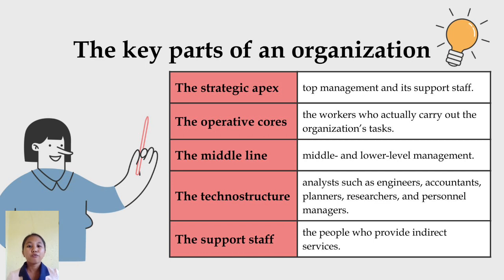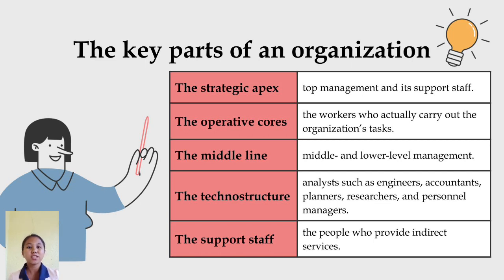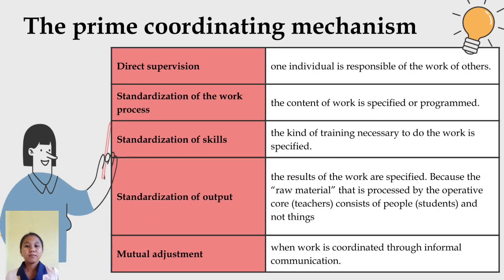The fourth key part is the technostructure — analysts such as engineers, accountants, planners, researchers, and personnel managers. In school districts, divisions such as instruction, business, personnel, public relations, research, and development constitute the technostructure. The fifth and last key part is support staff — the people who provide indirect services.